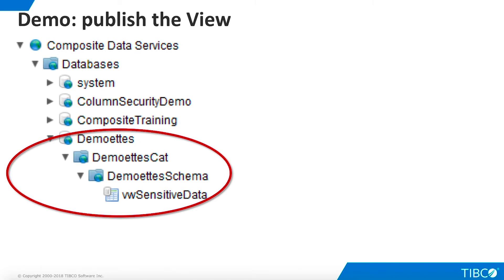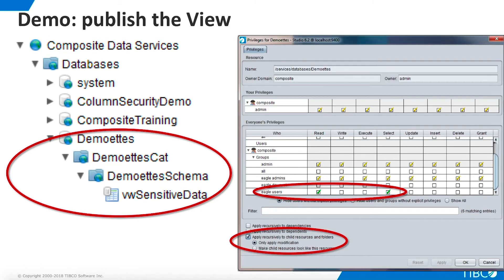Publish the view. Note that the Eagle Users group will not have privileges yet for the published view, even though we set them on the Design Time view. To grant access to Eagle Users, open privileges for the top-level container, called Demoettes in this example. Add Read and Select privileges for Eagle Users and check the box to apply these privileges to child resources and folders. This will propagate the privileges to the catalog and schema containers as well as to the published view.